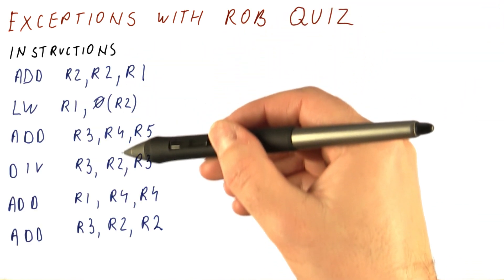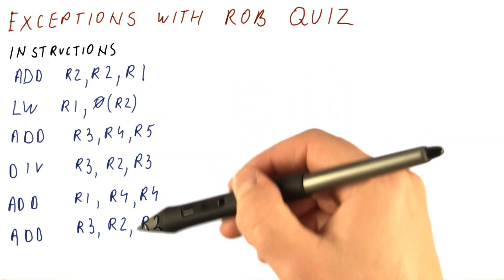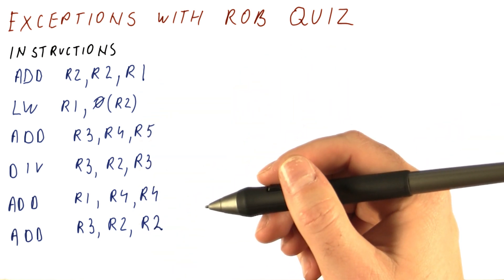Let's say that we have these instructions in program order. This is the order in which they are supposed to execute according to the programmer.